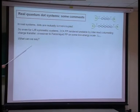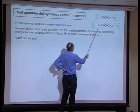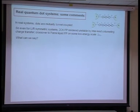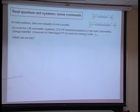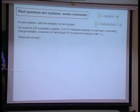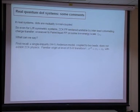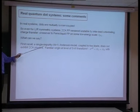Finally, let me comment briefly on real quantum dot systems. We have looked so far at exchange-coupled systems, but in real quantum dots they're actually tunnel-coupled with tunneling T. So even for left-right symmetric systems, the two-channel Kondo fixed point will be rendered unstable by inter-lead co-tunnelling charge transfer terms, and you will have crossover to a Fermi liquid fixed point on some low-energy scale T-Fermi-liquid.